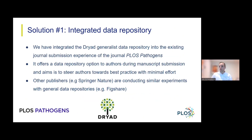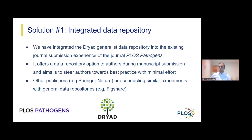The first solution we are testing is the Dryad Generalist Data Repository, which has been seamlessly integrated into the existing journal submission experience of PLOS Pathogens. It offers a data repository option to authors during the manuscript submission process and aims to steer authors towards best practice with minimal effort. Authors do not need to leave the journal's submission process to use the repository, and we aim for authors to use this option instead of uploading data as supporting information files.